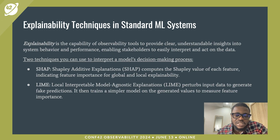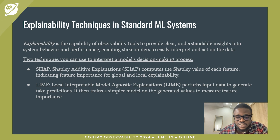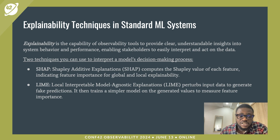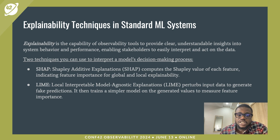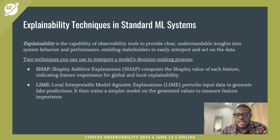Let's talk about explainability techniques in standard ML systems. Explainability is the capability of observability tools to provide clear, understandable insights into system behavior and performance, enabling stakeholders to interpret and act on the data. Two common techniques for interpreting a model's decision-making process are SHAP and LIME. SHAP — Shapley Additive Explanations — computes the Shapley value of each feature, indicating feature importance for global and local explainability. LIME — Local Interpretable Model-Agnostic Explanations — perturbs the data to generate fake predictions, then trains a simpler model on the generated values to measure feature importance.